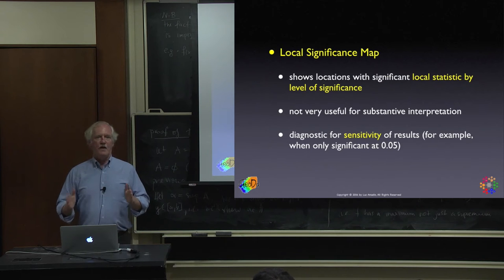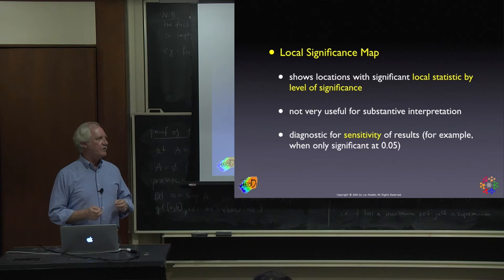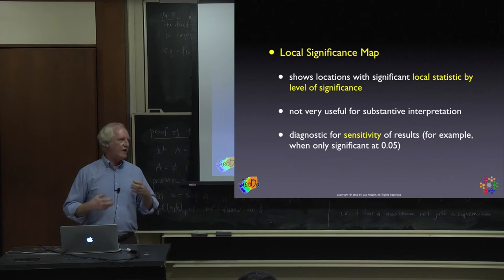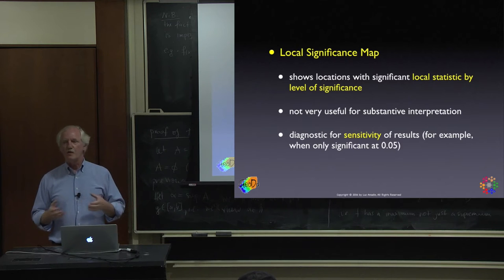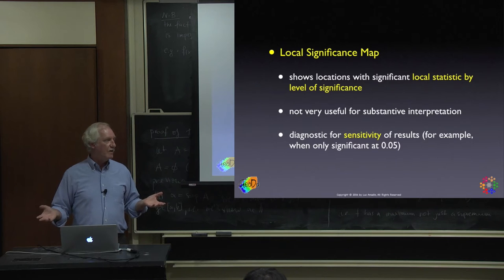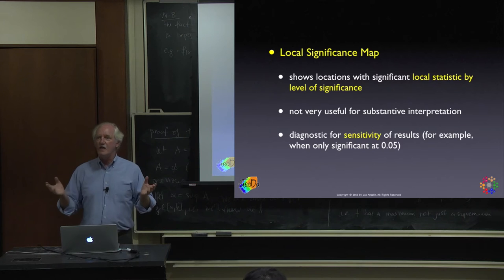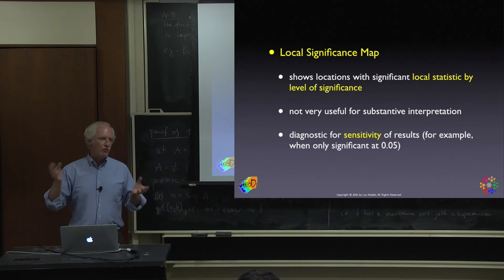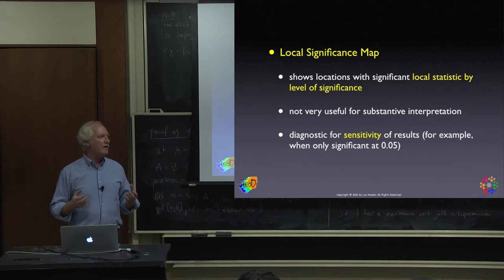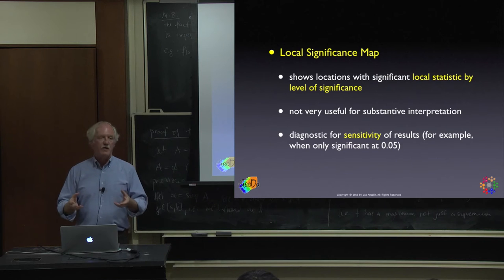One golden rule — and I say this because I see the opposite too many times in practice: do not map the locations that are not significant. Just as with Moran's I and Geary's C, if it's not significant, there is no point calling it positive or negative. In the local case, this is even more important because it's very easy to map all the local Moran values, but it's highly misleading.